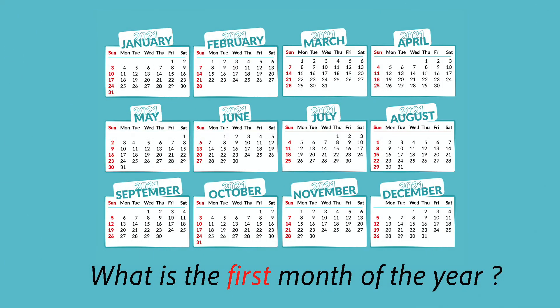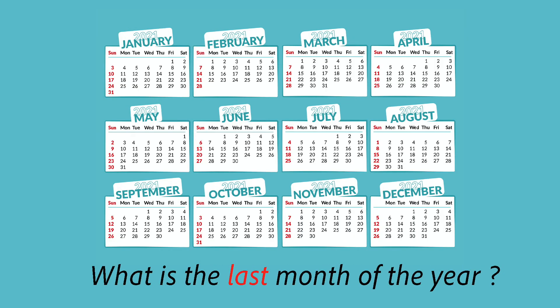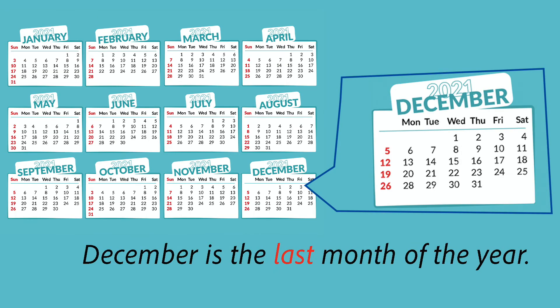These are the months of the year. There are twelve months in a year. What is the first month of the year? January is the first month of the year. What is the last month of the year? December is the last month of the year.